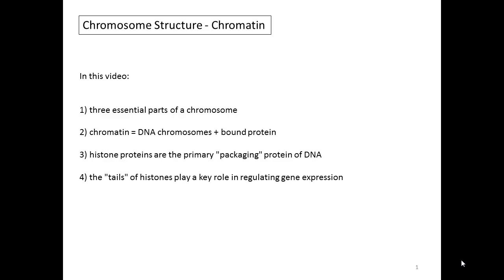In this video, we'll continue our discussion about chromosomes, talking about their structure and the three essential parts of a chromosome. We'll talk about chromatin, which is the DNA chromosomes and the bound protein. We'll talk about histone proteins, which are the primary proteins which package DNA inside the cell. And we'll talk specifically about the tails of the histone proteins, the very ends of which play an important role in the regulation of gene expression.